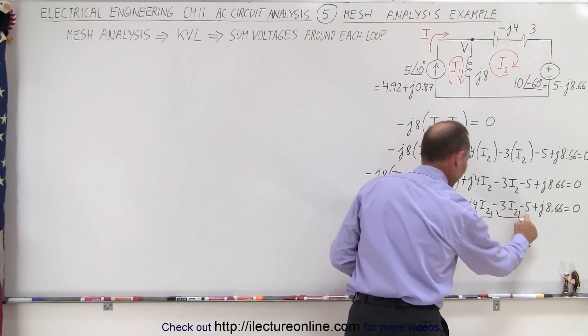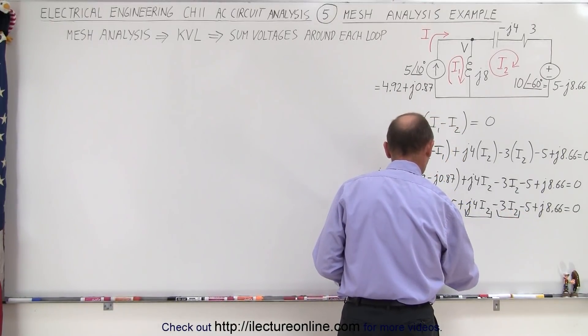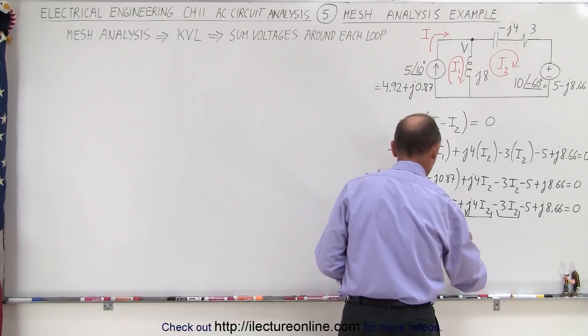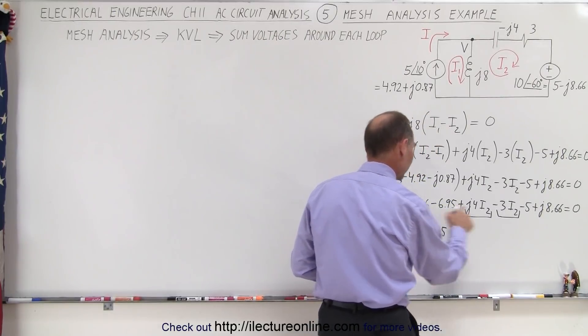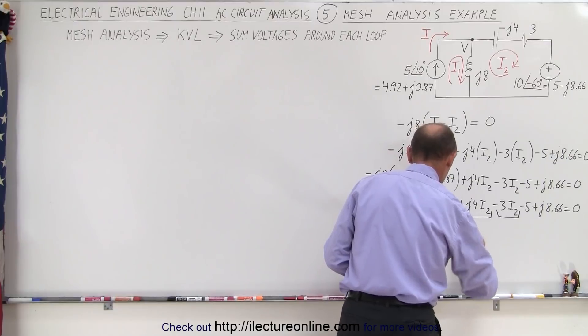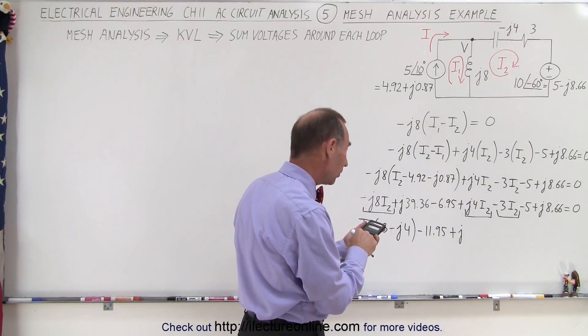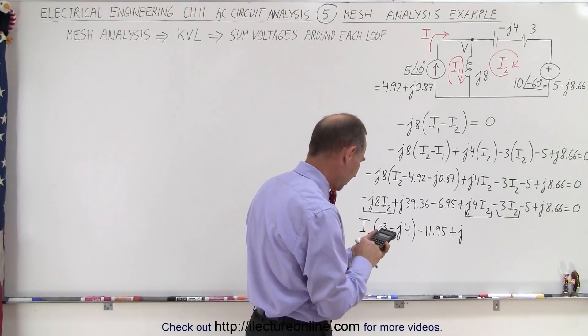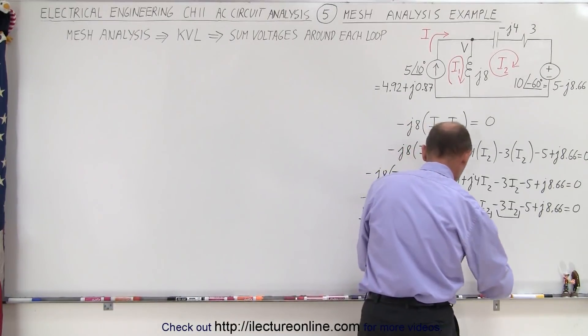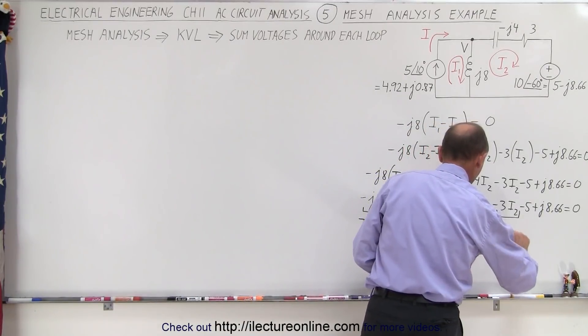Let's see the real part minus 6.95 minus 5 that would be minus 11.95 and plus and plus it would be plus J39.36 plus 8.66 that would be 48.02 which is equal to 0.